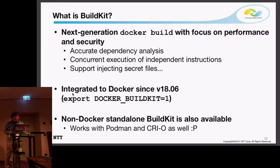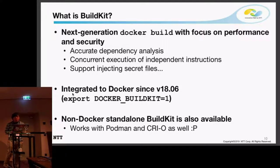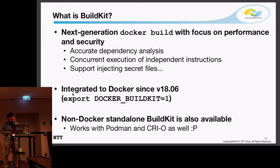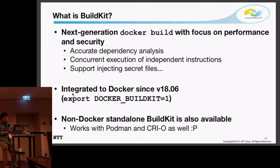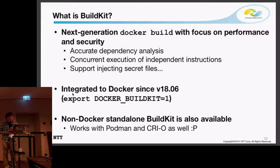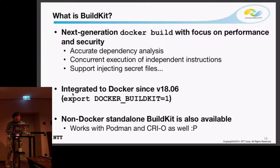BuildKit has a bunch of modern features such as cache mount, which can make builds up to 33 times faster. It also supports injecting secret files such as SSH credentials or Amazon SSH credentials into build containers without writing secret files into the final output image. BuildKit also has support for new formats different from Dockerfiles, such as buildpacks, and also supports Mockerfile, which is similar to a Dockerfile but written in YAML format. It should be easy to support new formats such as Singularity build files.